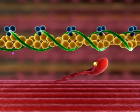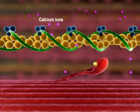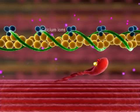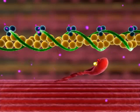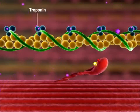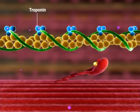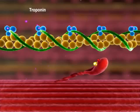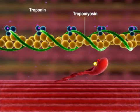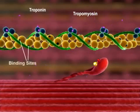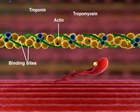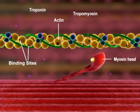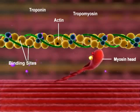The formation of a crossbridge is initiated when calcium ions, released from the sarcoplasmic reticulum, bind to troponin. This binding causes troponin to change shape. Tropomyosin moves away from the myosin binding sites on actin, allowing the myosin head to bind actin and form a crossbridge.